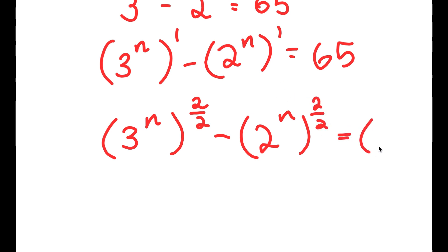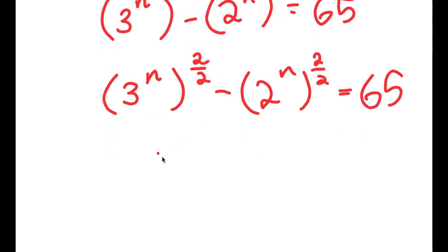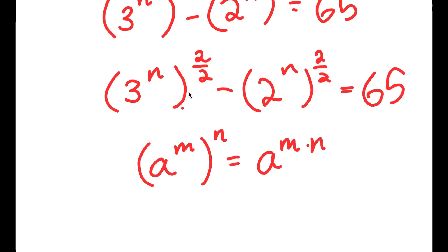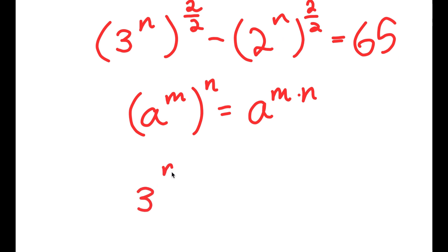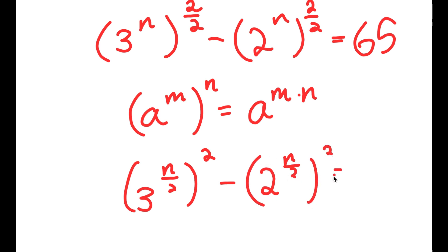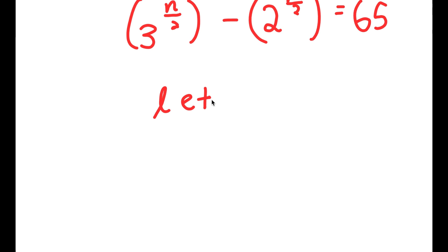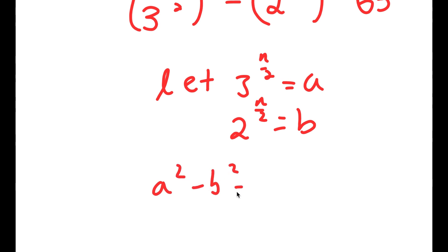I'm going to do the same for 2 to the power of n. The reason I did that is because if I have something in the form a to the power of m to the power of n, this is the same thing as a to the power of m times n. So n times 2 over 2 gives 3 to the power of n over 2, all squared, minus 2 to the power of n over 2, all squared. I'm going to let 3 to the power of n over 2 equal a, and 2 to the power of n over 2 equal b. So now I have a squared minus b squared is equal to 65.